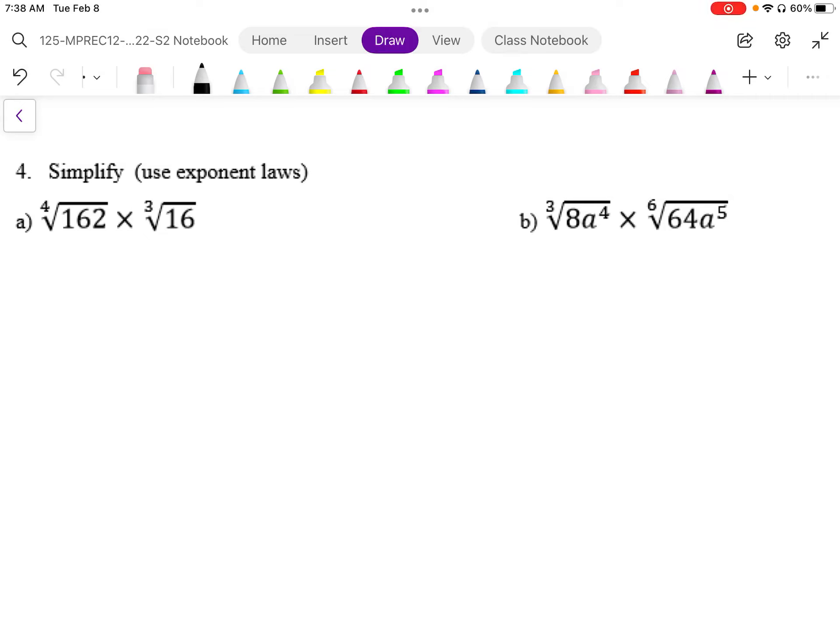In 4b, we have two radicals where the indexes don't match, so we can't multiply them as is.